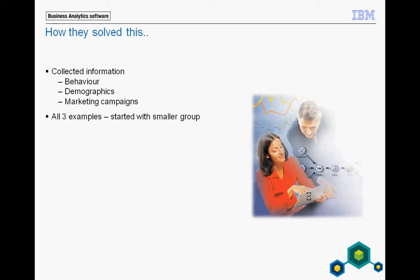I will give you three examples. All three examples start with a smaller random group to do a test from the beginning. When they tested this group and gathered information, they applied those results back to the rest of the customer base using predictive analytics. Example one was a very simple one — and it's good to start simple. That was to see which type of marketing was best for different types of people, like a gift, a photo, or a special offer in the marketing campaign.